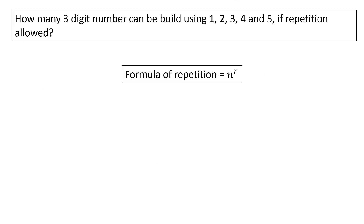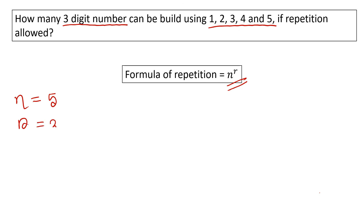For the permutation formula, n is the total number of items and r is the number of items we are selecting. We choose r items from n total items to find the number of arrangements.